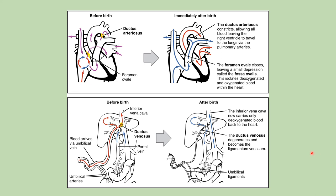This diagram shows the circulatory changes before and after birth. Before birth, the shunts are present in the heart. Immediately after birth, the foramen ovale closes to form the fossa ovalis, and the ductus arteriosus closes — because now you need proper blood flow to the lungs, which are functioning and need to oxygenate blood and get rid of CO2.